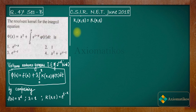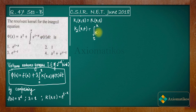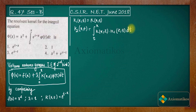Then we find k2(x, t), which is equal to the integral from t to x of k(x, z) multiplied with k1(z, t). This is what we have as k2, and in a similar fashion we will find the remaining ones.